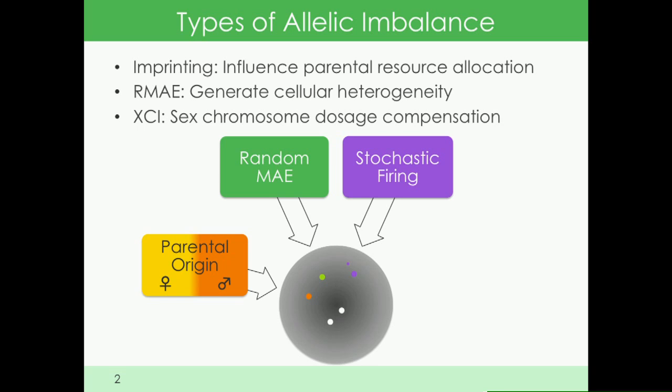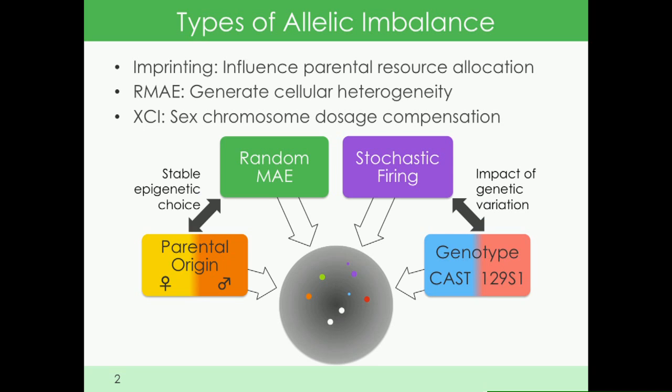If you look at any given gene at the single-cell level, genes are not on all the time—you see transcriptional bursts. Because the two alleles aren't coordinated, you can find cells with one active nascent transcript, two, or none. If that happens consistently because there are two variant alleles, then we're talking about the impact of genetic variation.